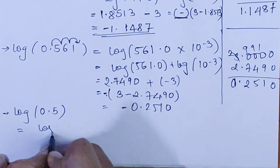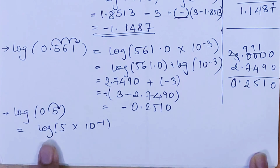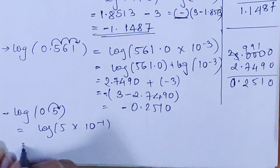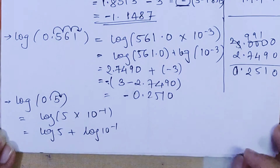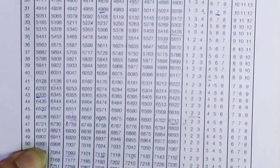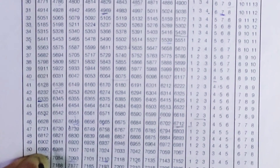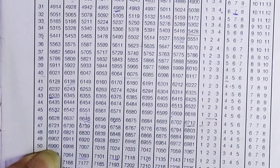Now I will solve log(0.5). Moving the decimal: log(5 × 10^(−1)) — I went forward one zero. Applying the formula: log(5) + log(10^(−1)). Now find log(5): treating it as log(50), which from the table gives 6990.